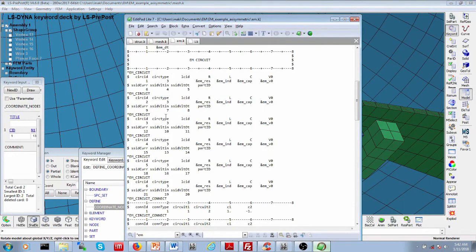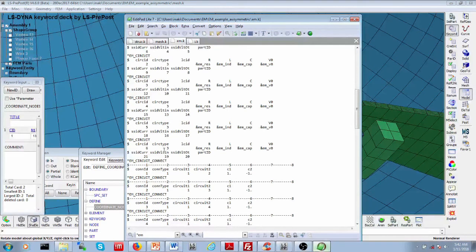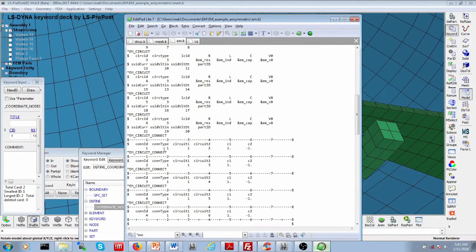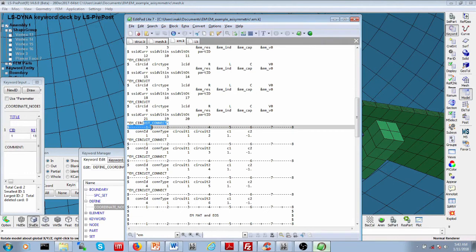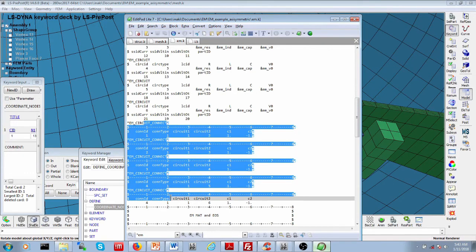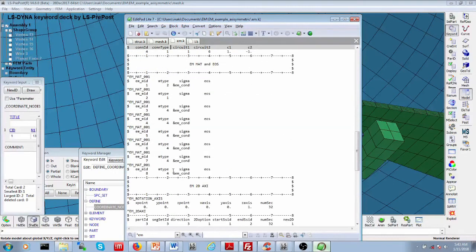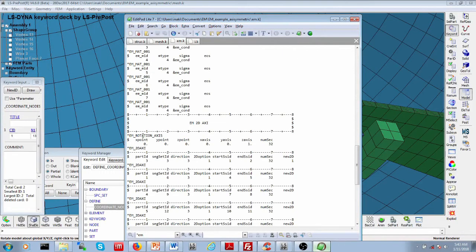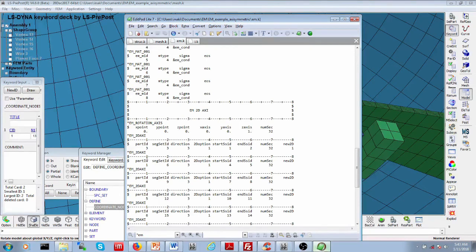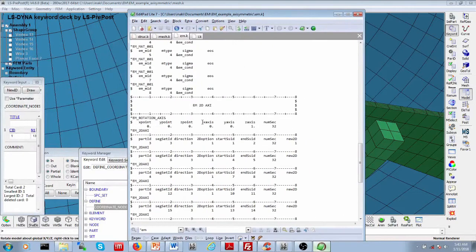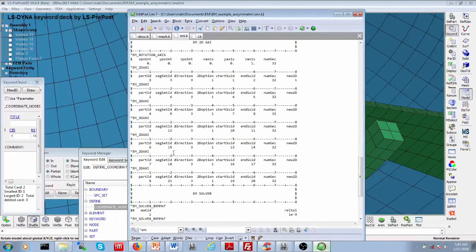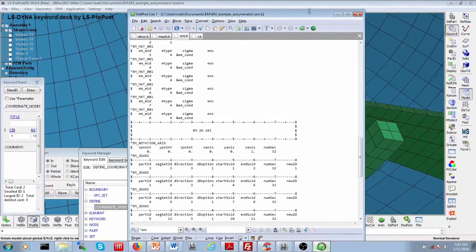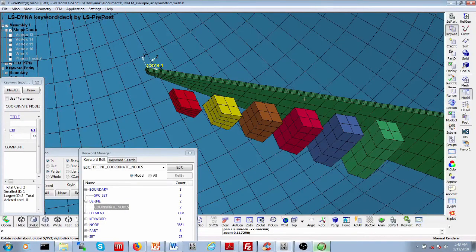And then, since we have six circuits and we want to connect them together, it means that we have five times the keyword EM_CIRCUIT_CONNECT that we have here. Then, we have a rotation axis, that's fairly simple. And then, for each axisymmetric part, so, in this case, we have the workpiece and our six turns of the coil, we have one EM_2D_AXIS keyword.